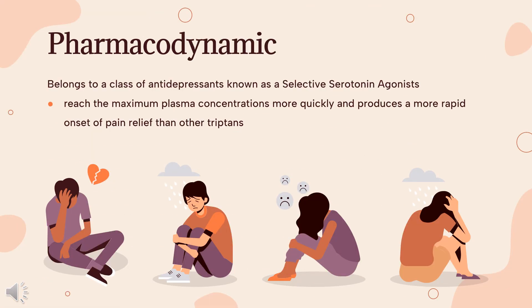Pharmacodynamics: Rizatriptan relieves migraine-associated symptoms. It is reported to reach maximum plasma concentrations more quickly and produces a more rapid onset of pain relief than other triptans, such as sumatriptan. However, it has a relatively shorter elimination half-life than other triptans.